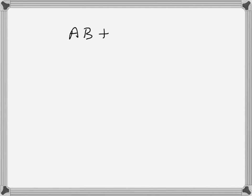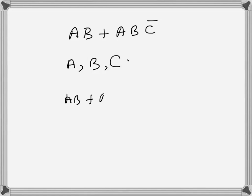The domain of a boolean expression is all the variables. So let's say this is a boolean expression: a, b, c-bar. The domain will be a, b, and c — all the variables. Similarly, if we have another expression, the domain will be a, b, c, d. That's the domain — all the variables.